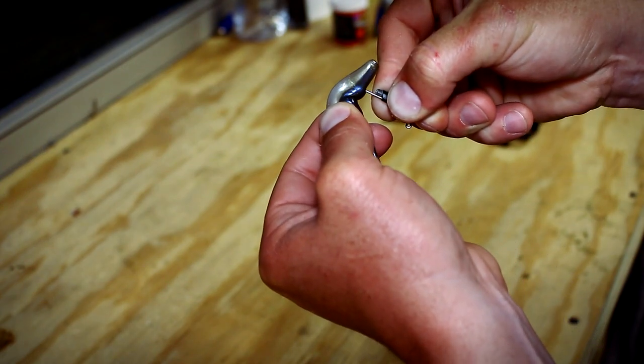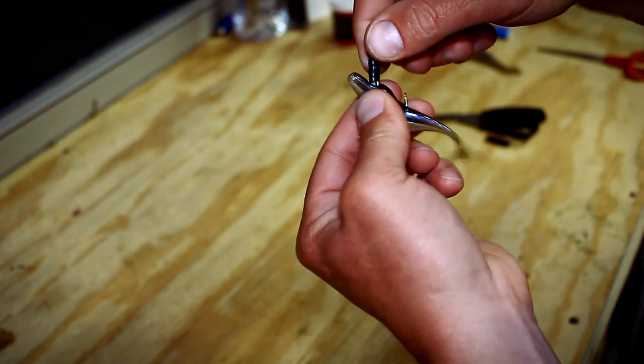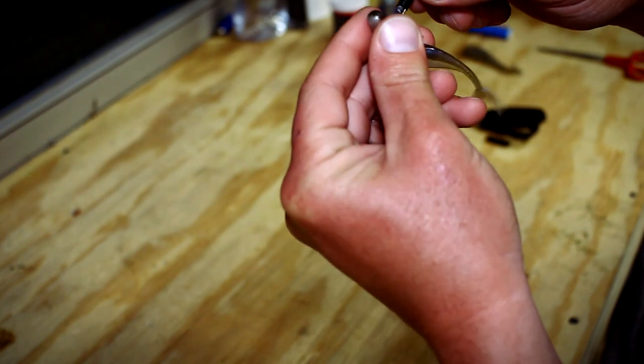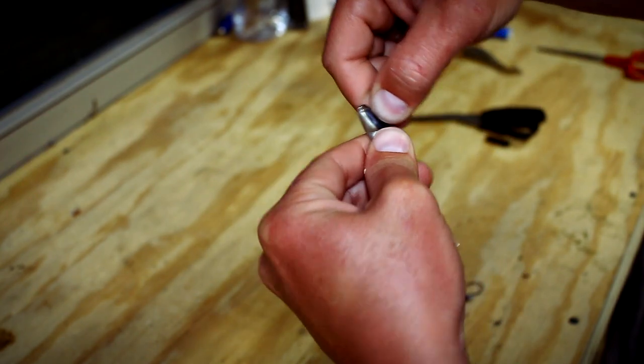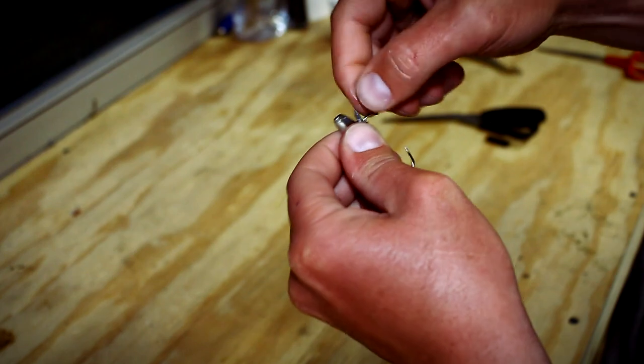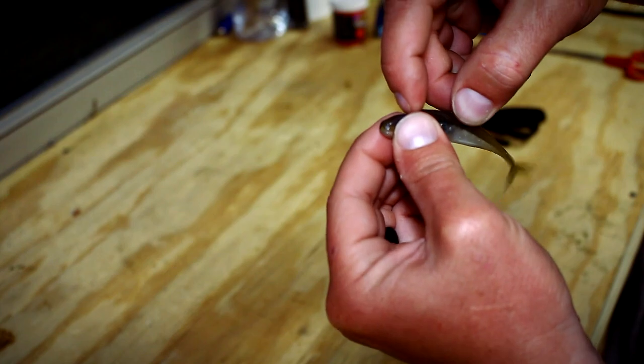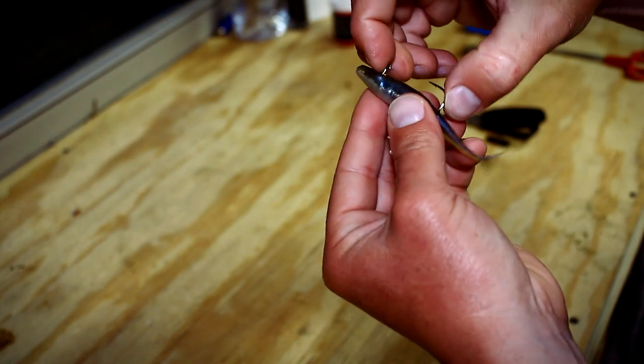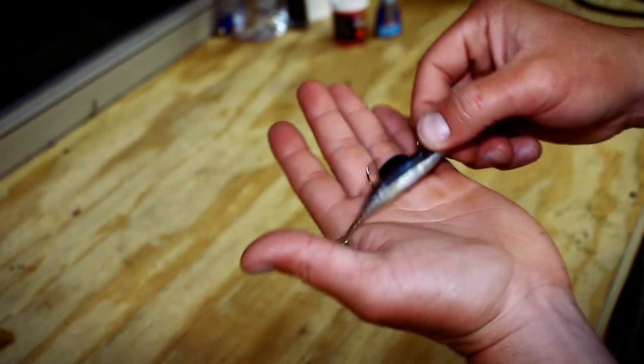Thread it through until you get to the bend, almost on the straight part of the hook. Then you want to turn it back out just like so. You can actually moisten this up, put some spit on it, and it'll slide on there a little bit better. Once you get to this point right here, you want to pull the head and push it down over the point of the nail weight. I didn't get this one perfectly straight for demonstration purposes, but that right there is the hover rig.